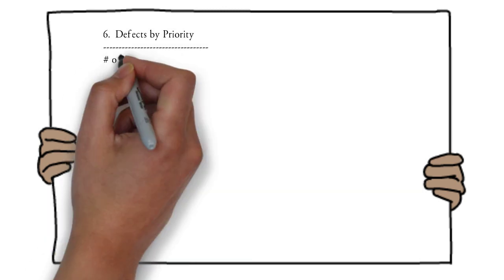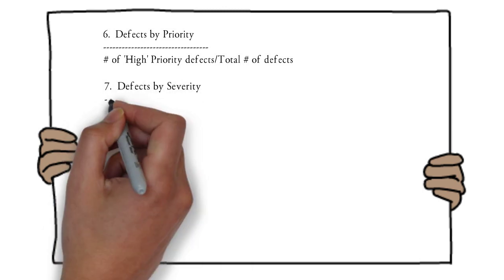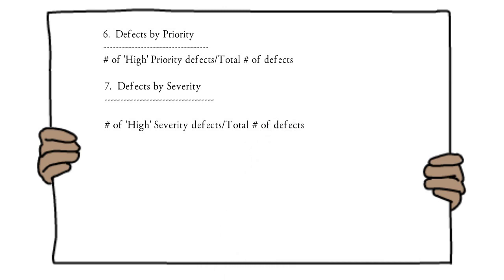When testers raise a defect, they assign priority and severity. Defects by priority and defects by severity can be measured. For high priority defects: (number of high priority defects / total number of defects) × 100. Similarly, high severity defect percentage = (number of high severity defects / total defects) × 100. This formula applies to any severity and priority status.